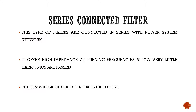However, the major drawback of the series connected filter is its cost — it is very high cost compared to that of shunt connected filter. It is also capable of compensating only lower order harmonics, because the number of series connected filters required will be very high for higher order harmonics. These are the major drawbacks of the series connected filter.